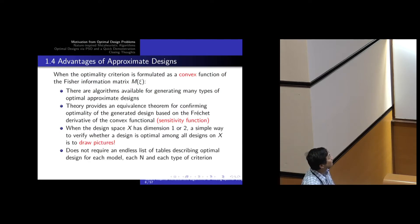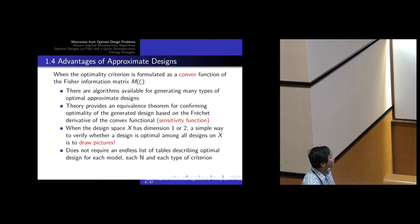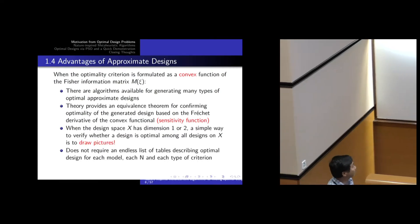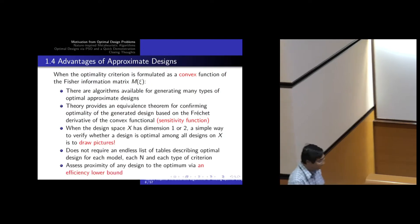This is probably outdated now, but previously statisticians had books of statistical tables listing optimal designs. Kiefer's framework avoids an endless list of tables — for each model, each criterion, and each n, you'd have to tabulate allocations separately. By working with approximate designs, you gain the advantage that even if a design is not optimal, the equivalence theorem tells you how far it is from the optimum without knowing where the optimum is.